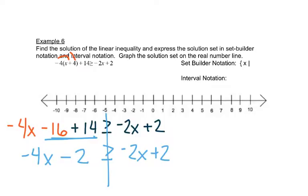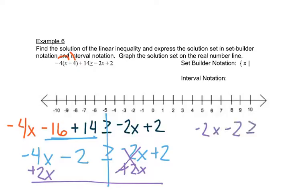And then we need to move our letters to the right, so we'd have plus 2x and plus 2x. This gives us a negative 2x minus 2 is greater than or equal to 2.